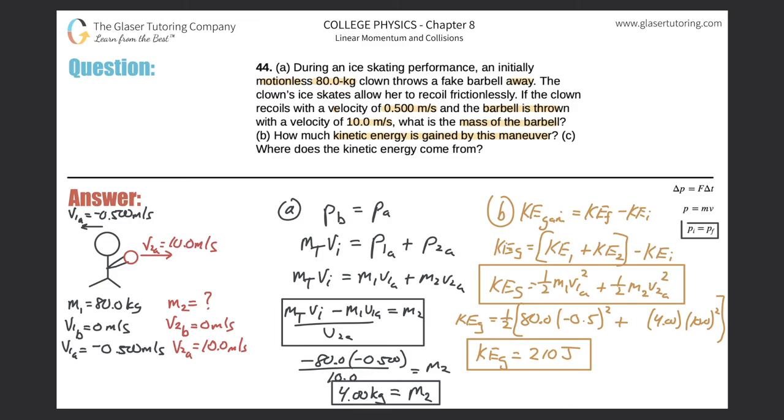so that's how much kinetic energy will be gained by the maneuver. And the question now for letter C is, where does it come from? Where does this kinetic energy come from? Can't be created or destroyed, just transferred. Well, the kinetic energy is coming from the clown's muscles. The clown is pushing the ball this way, and the ball, according to Newton's law, equal but opposite force, pushes the clown to the left. So that energy is coming from her muscles. Okay,